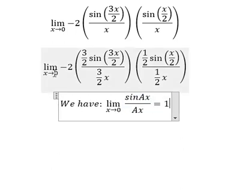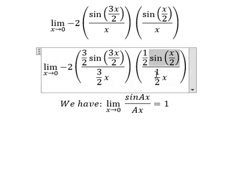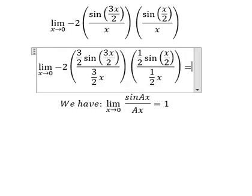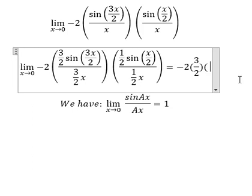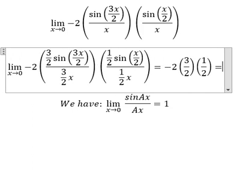When x approaches 0, sin(3x/2) over (3x/2) equals 1. Similar for this one, you get 1.